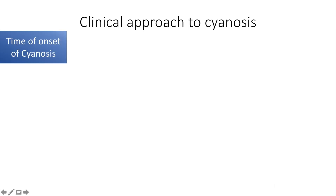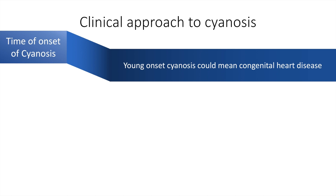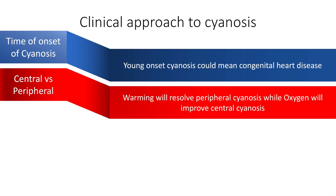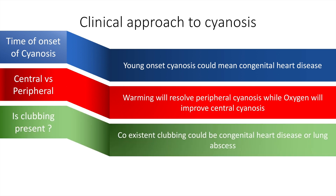The clinical approach to cyanosis includes determining the time of onset. A patient who has had cyanosis at a younger age may have congenital heart disease. To differentiate between central and peripheral cyanosis, application of warmth would generally resolve peripheral cyanosis, while oxygen would almost always improve central cyanosis. If clubbing is present, the patient may either have congenital heart disease or a lung abscess.